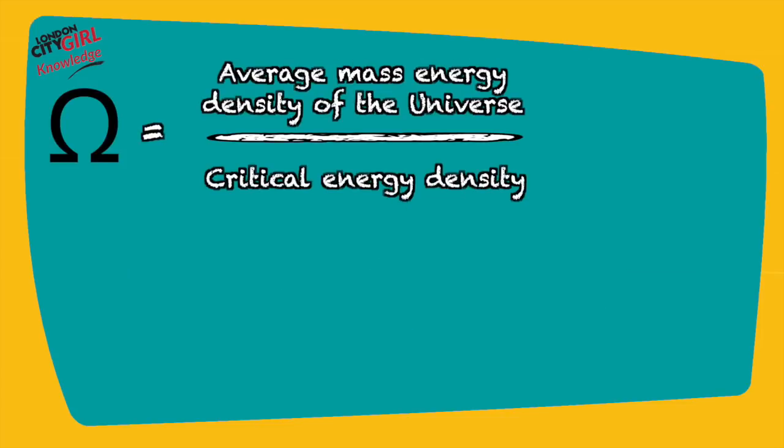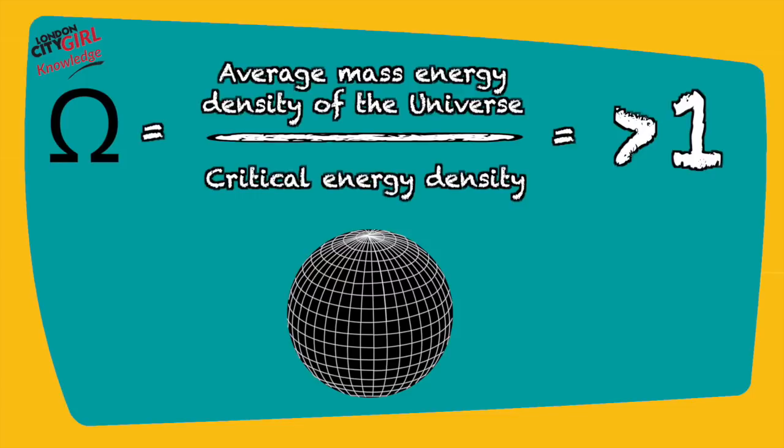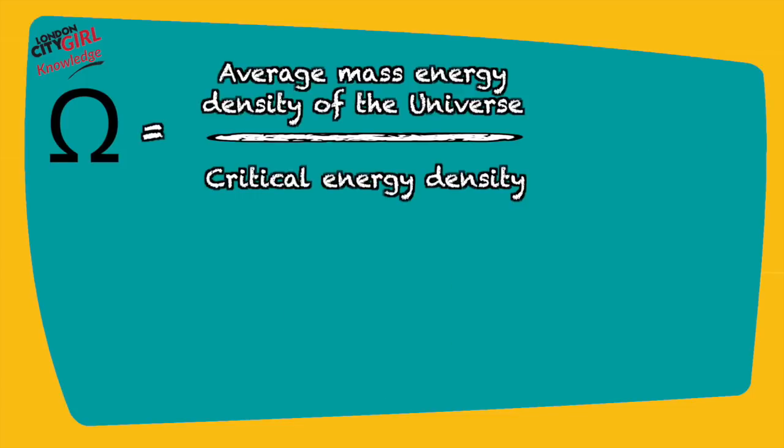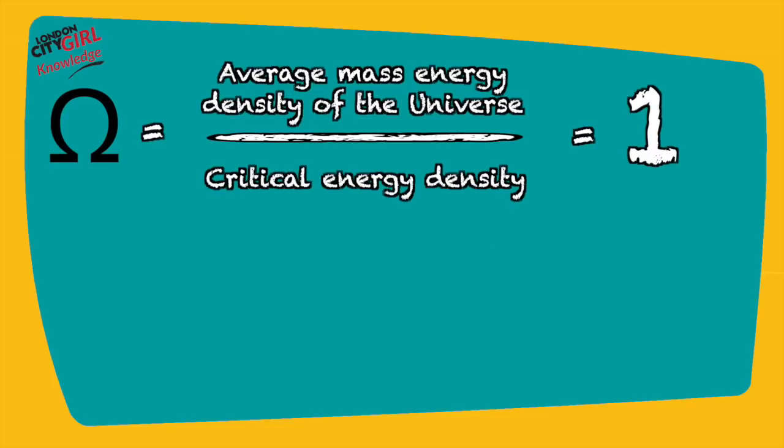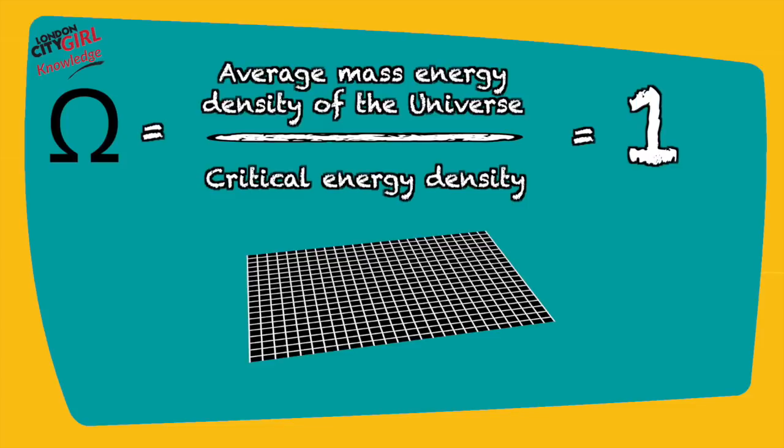If the density parameter is more than one, there is positive curvature. If the density parameter is less than one, there is negative curvature. And if the density parameter is exactly one, i.e. the average mass energy density of the universe is the same as the critical energy density, then the universe is flat.